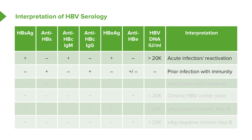Moving on to prior infection with immunity: the relevant immunoglobulin here is IgG. Notice that anti-HBc IgG is positive — that should be your focus in prior infection. Anytime there's prior infection, the immunoglobulin you'll have chronically is IgG. Anti-HBs will also be positive. HBeAg may or may not be found, but focus on IgG.